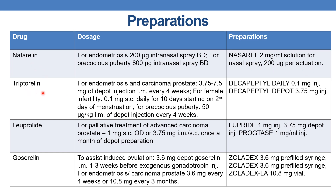The next drug is triptorelin. For endometriosis and carcinoma of prostate: 3.75 to 7.5 mg depot injection intramuscular every 4 weeks. For female infertility: 0.1 mg subcutaneously daily for 10 days starting on the second day of menstruation. For precocious puberty: 50 mcg per kg IM depot injection every 4 weeks. Marketed preparations are Decapeptyl 0.1 mg injection and Decapeptyl Depot 3.75 mg injection.